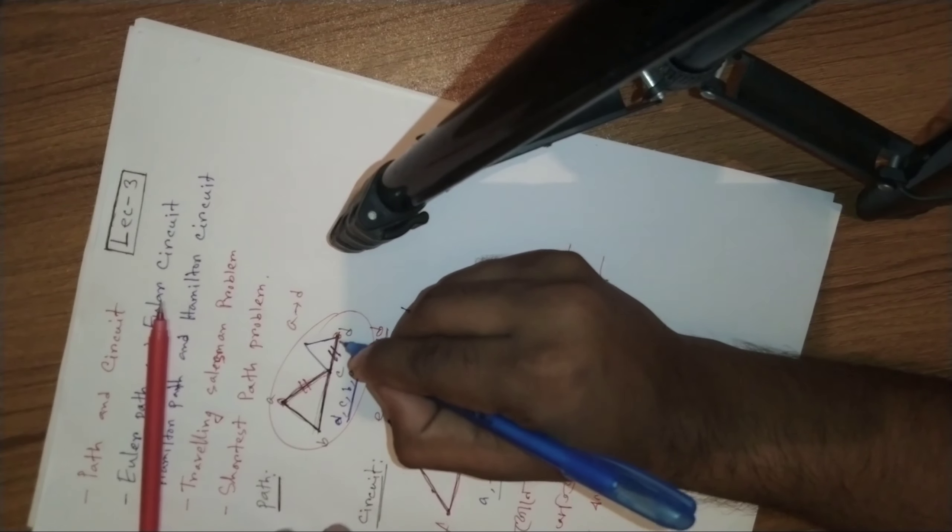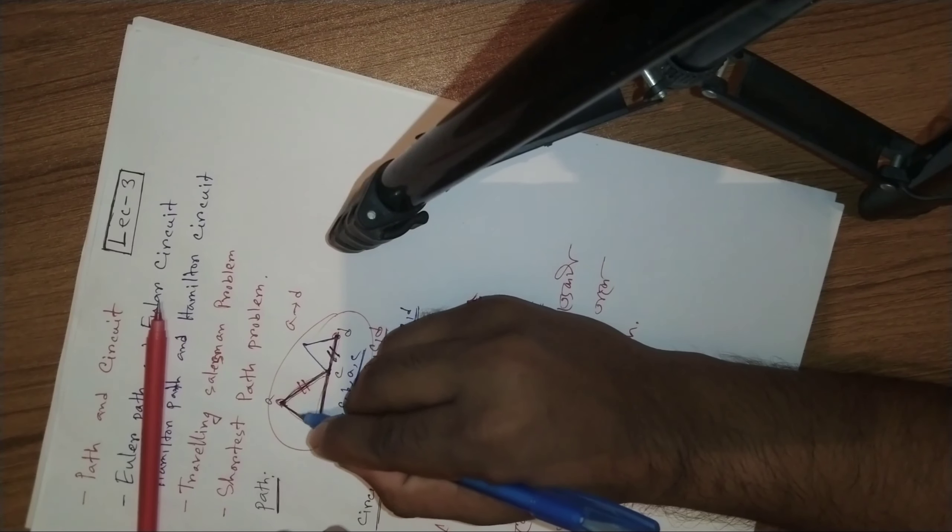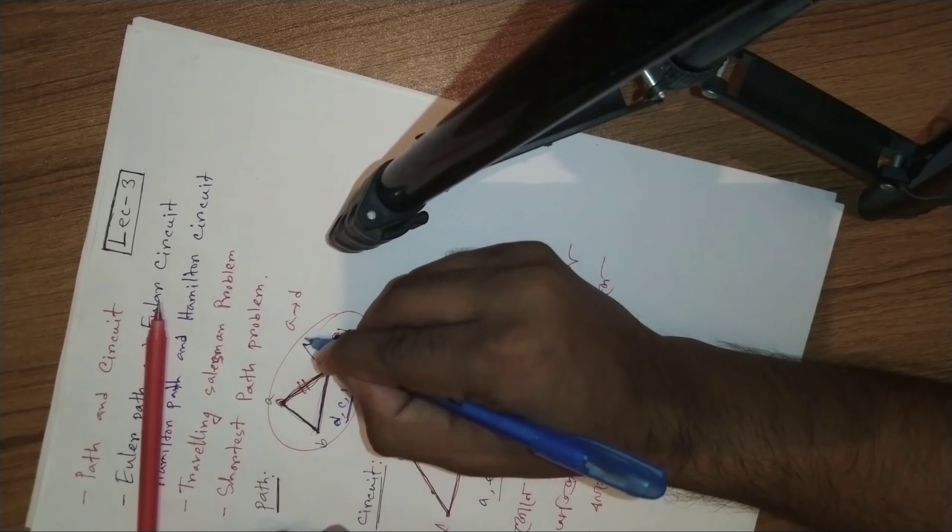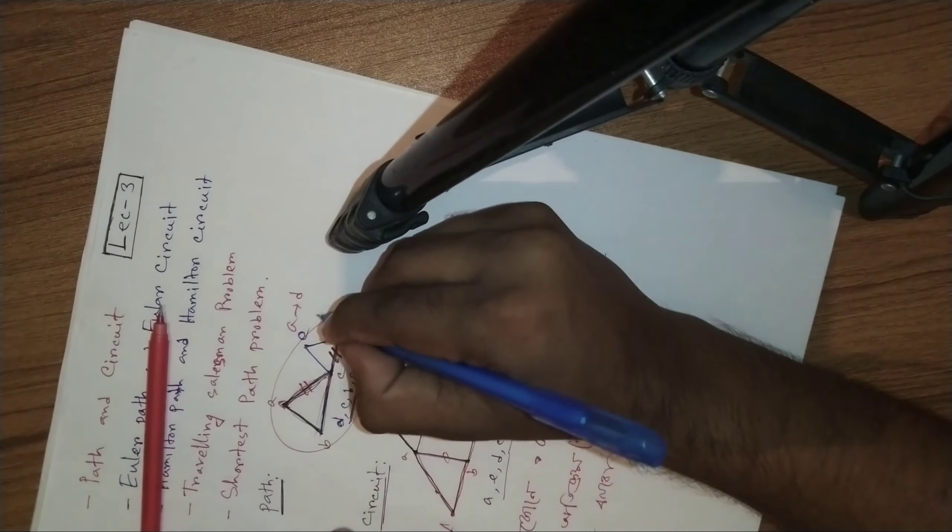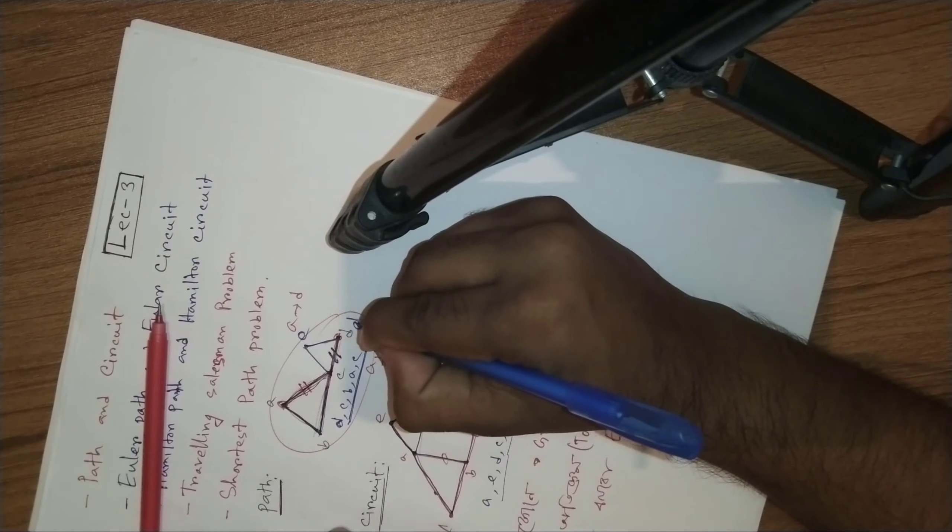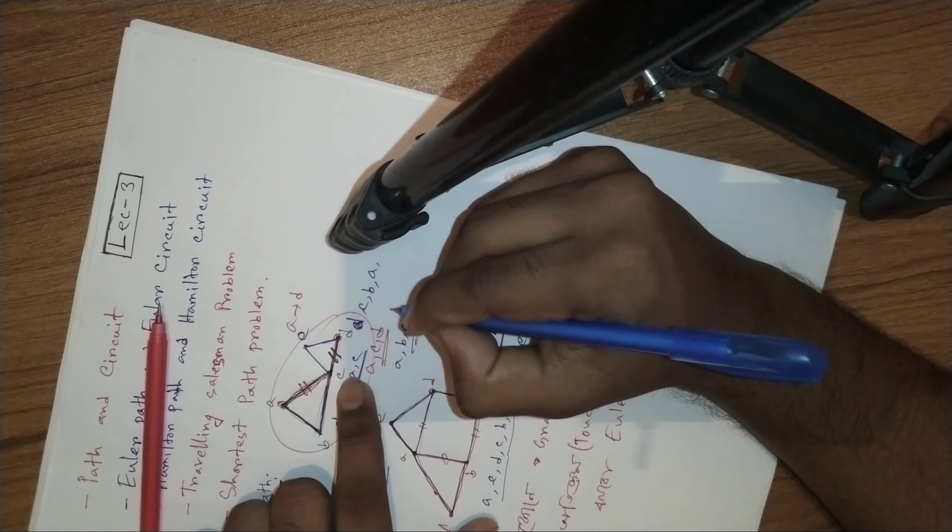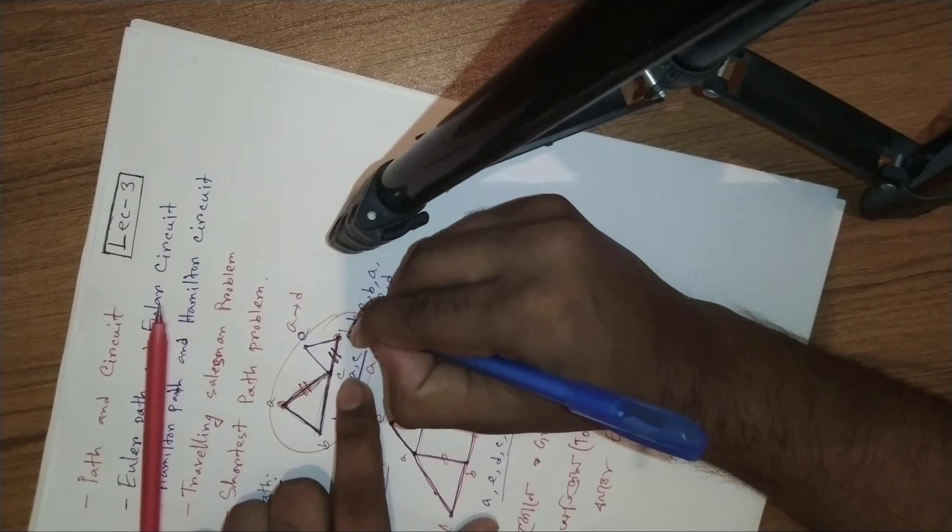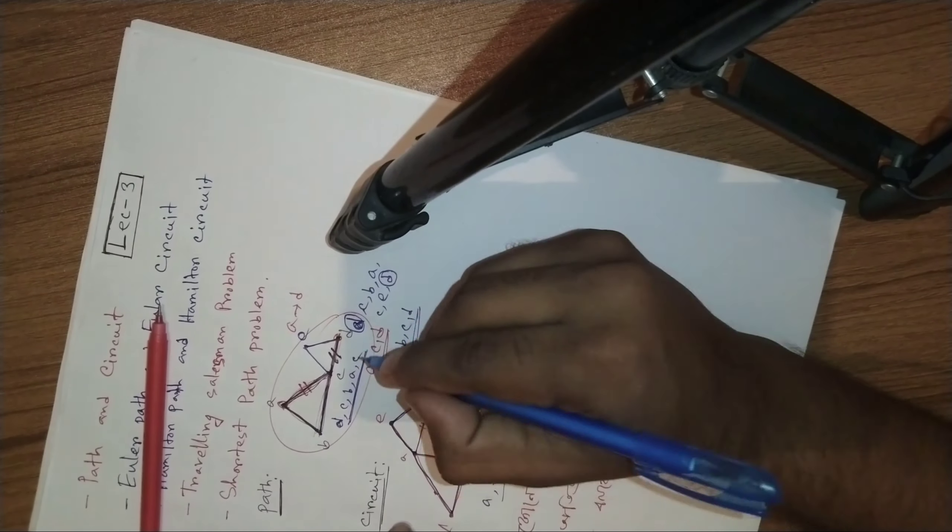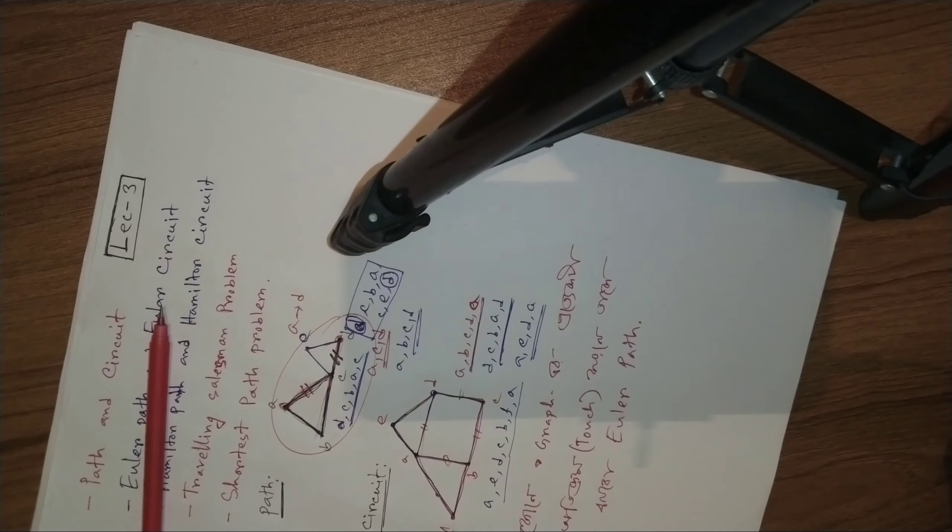You're going to traverse edges, like d, c, b, and back to a. That's one way to traverse it. The circuit condition requires that the connected graph protects each edge exactly once.